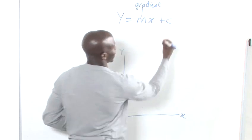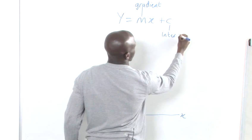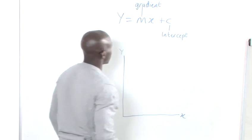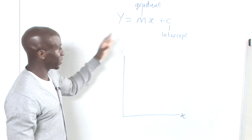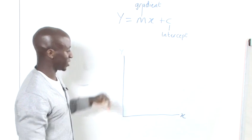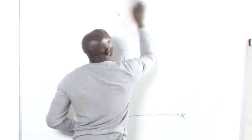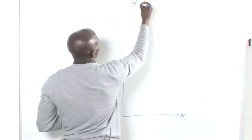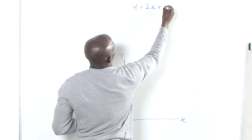So this is called your intercept. Okay. So the first thing we're going to do now is set up our general equation into a specific equation. So we have y equals 2x plus 1.